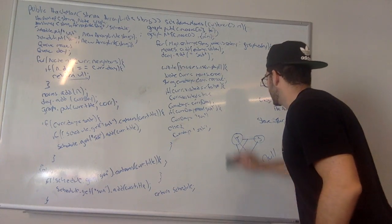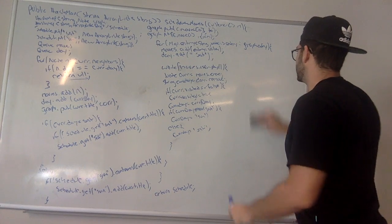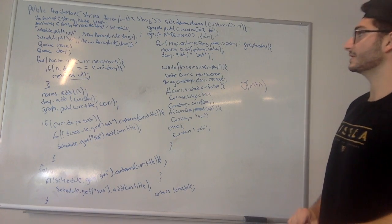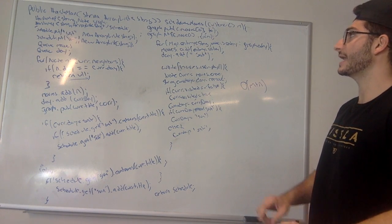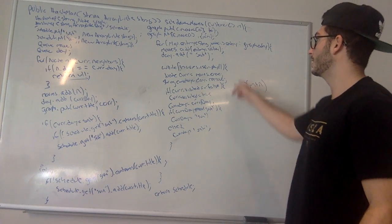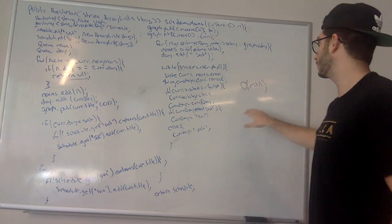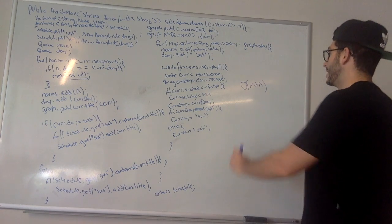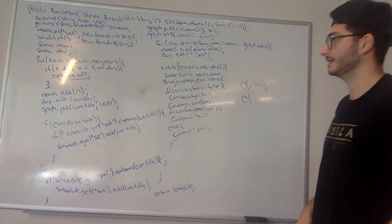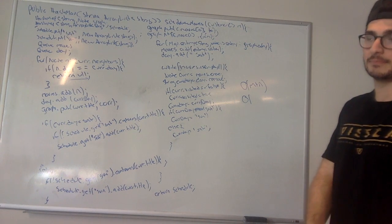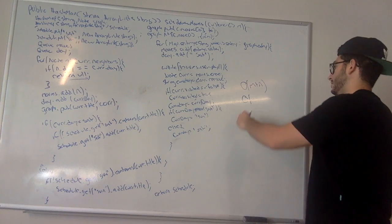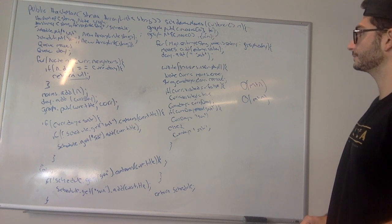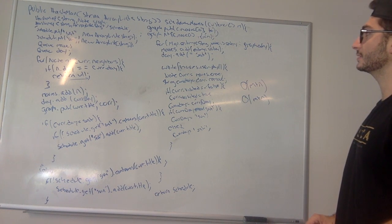As for time and space complexity: we have O(M plus N) for time, since we looped through M customers and N movies to construct the graph. For space, we constructed a graph with N vertices and M edges, so space is also O(M plus N). And that's everything.